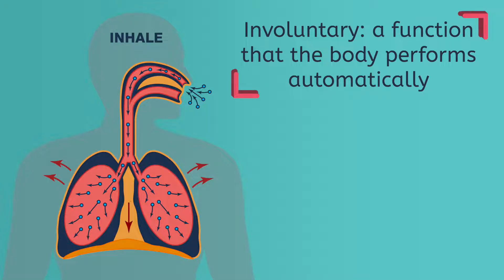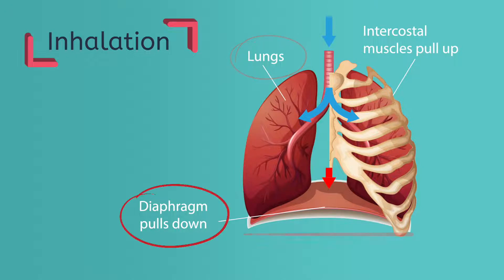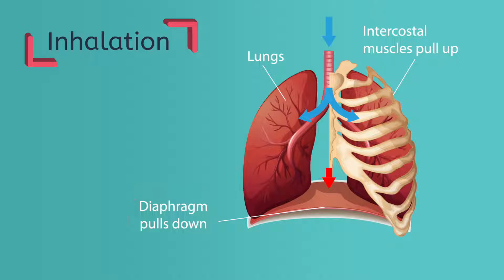To accomplish this, a muscle beneath the lungs called the diaphragm, as well as muscles around the ribs, contract or tighten, making the muscles smaller, allowing the lungs to expand, naturally pulling in air through the nose or mouth.